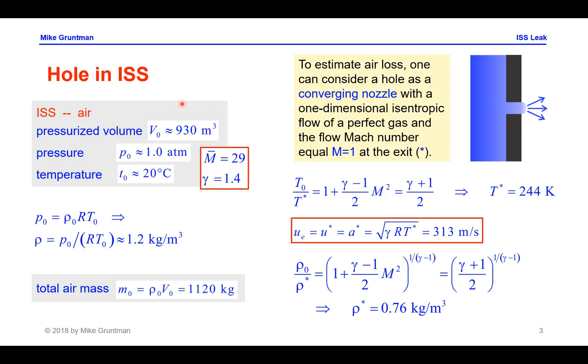Let us first estimate how much air we have at the International Space Station. Its pressurized volume is about 930 cubic meters. Pressure inside is about 1 atmosphere and temperature is room temperature, about 20 degrees C. The molecular weight of air is 29 and gamma, the specific heat ratio, is about 1.4. So we can write the equation for the perfect gas and immediately we will get the density of air, 1.2 kilograms per cubic meter. This translates into the total air mass in the station, 1120 kilograms. The station is enormous, its mass of air is more than 1 metric ton.